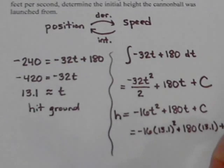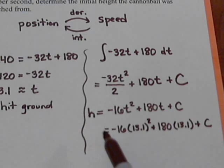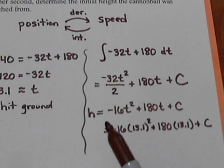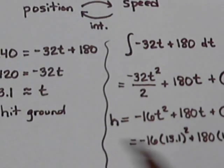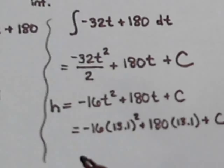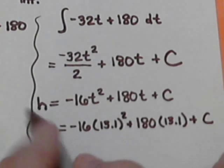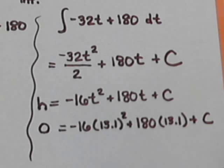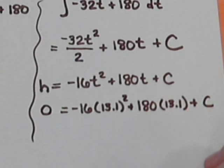So if we want to use that number over here, we have to know the h value that goes along with it. So what would be the height when it hit the ground? The height when it hits the ground would be 0. So now if we solve this, we can figure out what our C is.